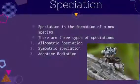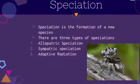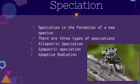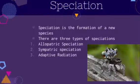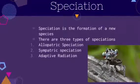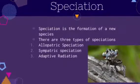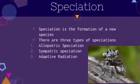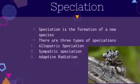Speciation is the formation of new species. There are three types of speciation: allopatric speciation, sympatric speciation, and adaptive radiation.